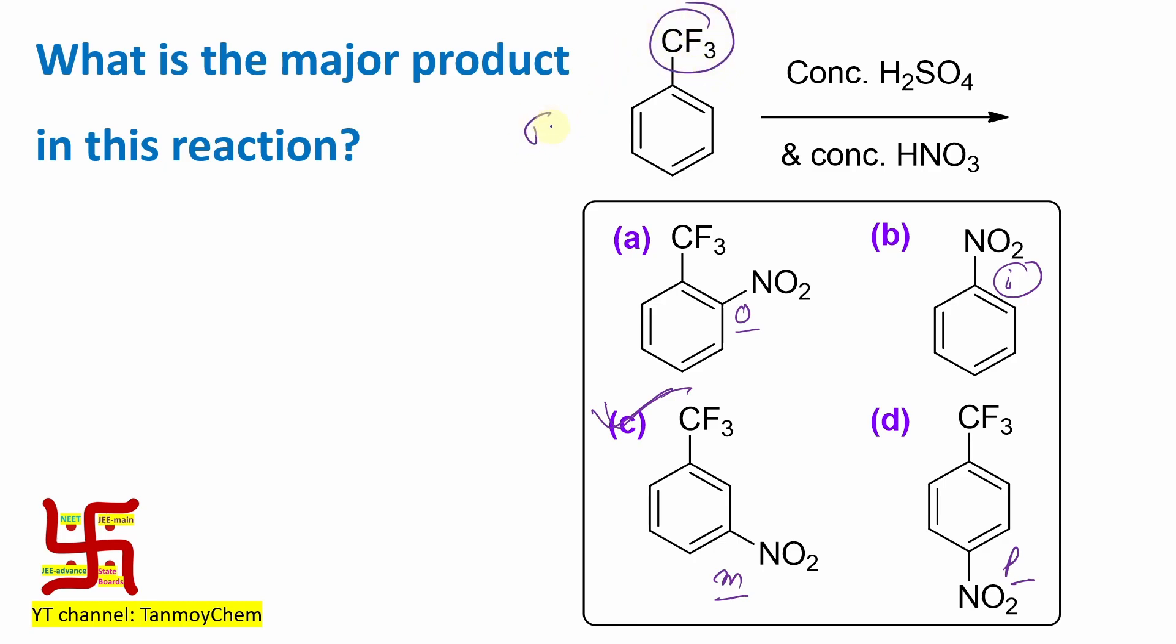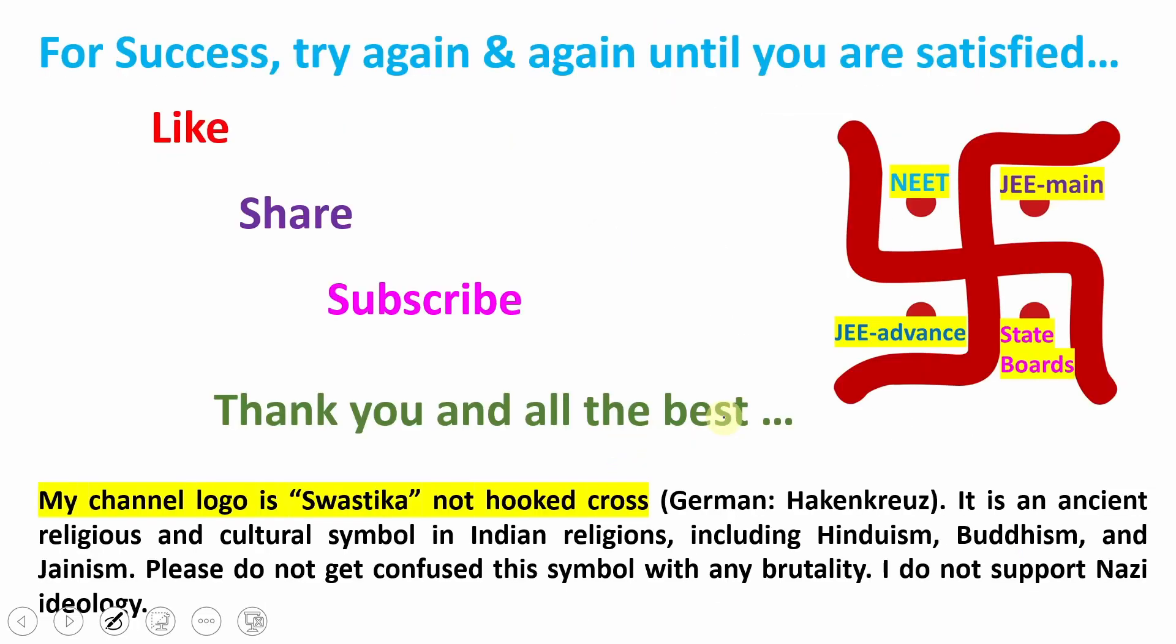If you get this question, remember one thing: CF3 is a very strong electron withdrawing group, I mean sigma withdrawing, minus I effect. That's why it results in any kind of aromatic electrophilic substitution at the meta position. This is the overall discussion. I believe this video may be useful. Thanks for watching. See you in my next video. Bye.